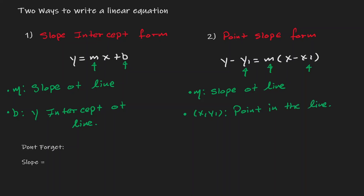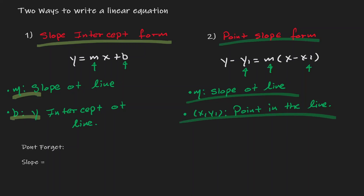These two forms will both give you the equation of a line. When do you know which equation to use? If you have the slope and the y-intercept, then use the slope-intercept form. If you have the slope and a point on the line, then use the point-slope form. And don't forget: slope is defined as y1 minus y2 over x1 minus x2.